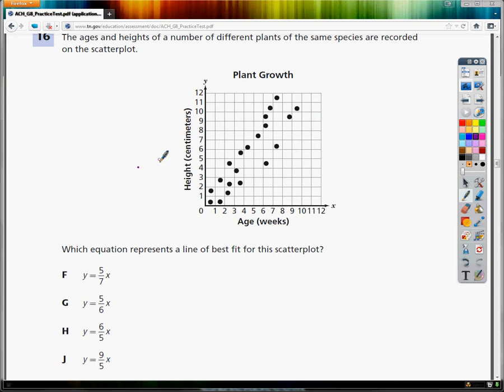Now, if you look at the question answer choices, you have 5 over 7x, y equals 5 over 6x, y equals 6 over 5x, and y equals 9 over 5x.